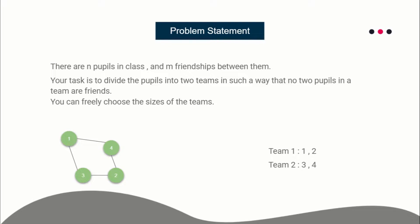This is the overall problem. If you think carefully, you see we have to divide the nodes, sorry, the number of nodes in two different teams, and all of the nodes in a single team should not have any edge between them. So what does it remind you of?